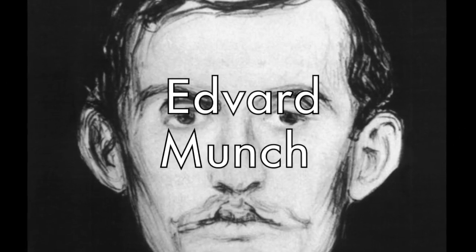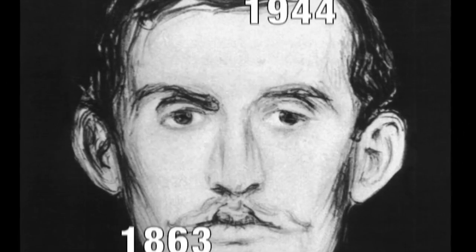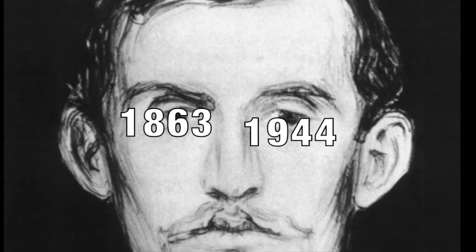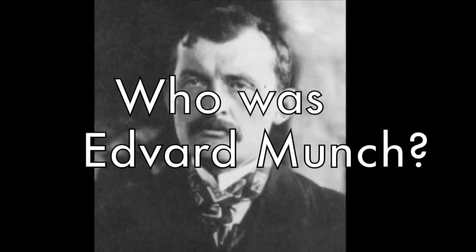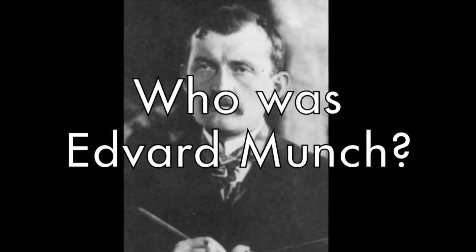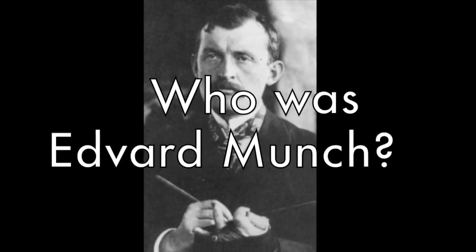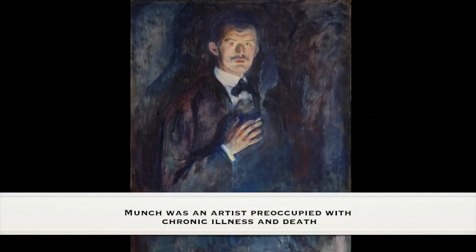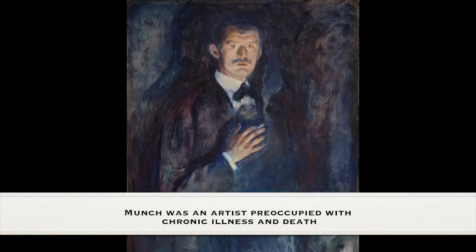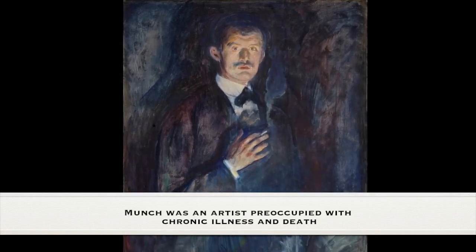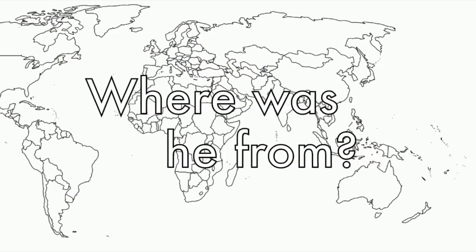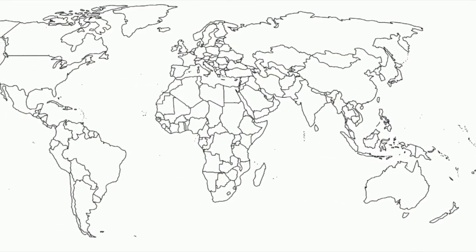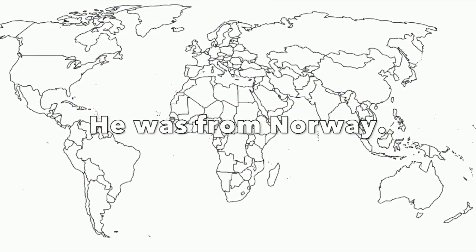Edvard Munch, 1863–1944. Who was Edvard Munch? Munch was an artist preoccupied with chronic illness and death. Where was he from? He was from Norway.